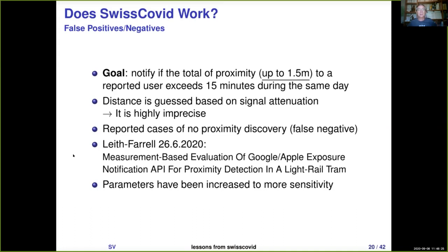We can see that in the SwissCOVID infrastructure some parameters were changed more than a month ago — the authority decided to increase the sensitivity. We don't know if they changed the distance threshold, which would be weird since 1.5 meters is written into the law. We don't know if SwissCOVID is now catching contacts at distances larger or smaller than 1.5 meters. We just don't know if SwissCOVID is working at all. We just hope it works.